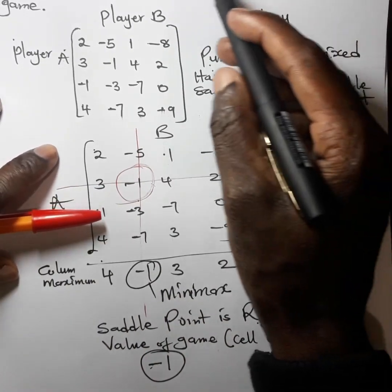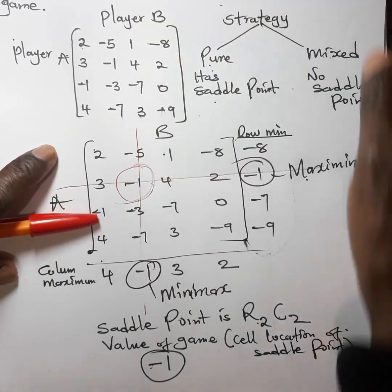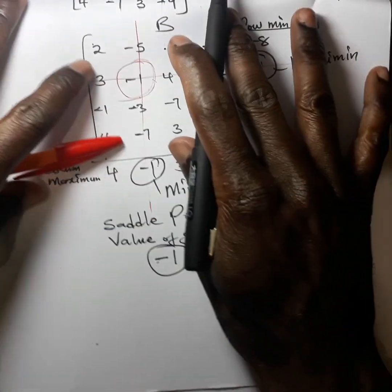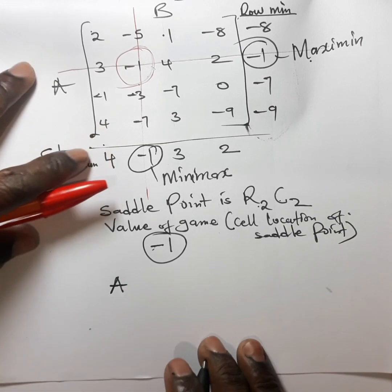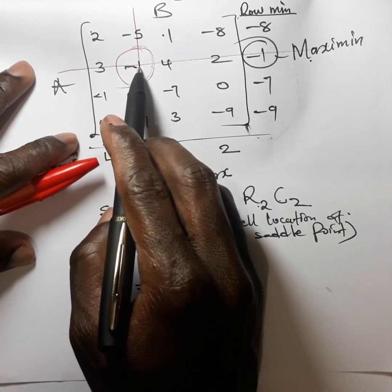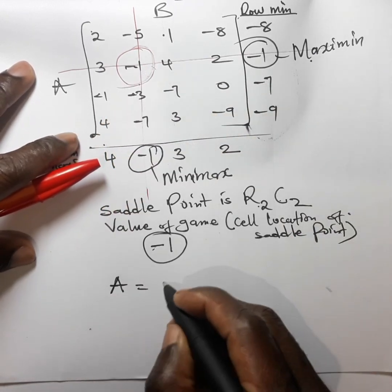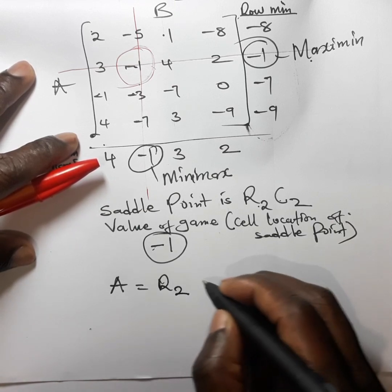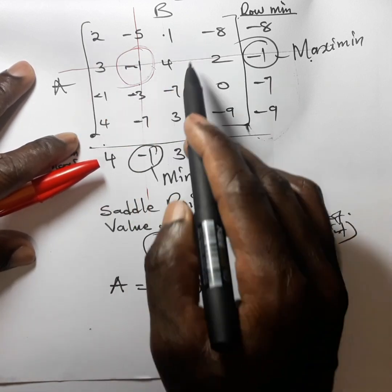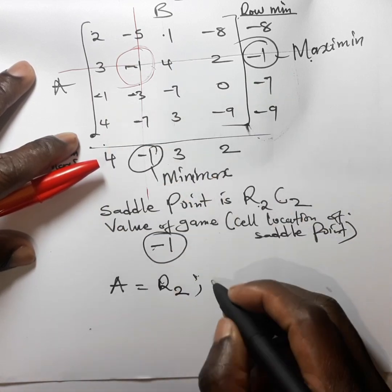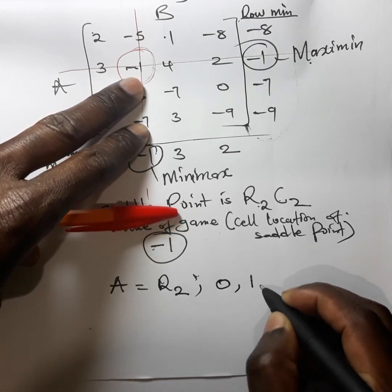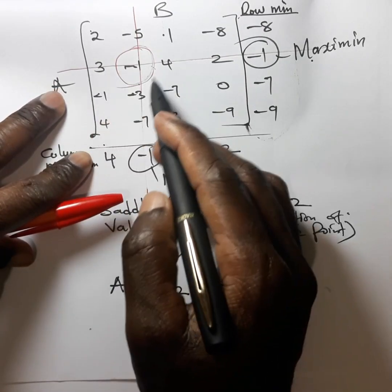Now we go to the optimum strategy for the two players. For player A, the best option is row 2, since the maximin is found in row 2. We have 4 rows in total. The strategy for player A is written as (0, 1, 0, 0) — meaning player A should play row 2 with probability 1 and all other rows with probability 0.